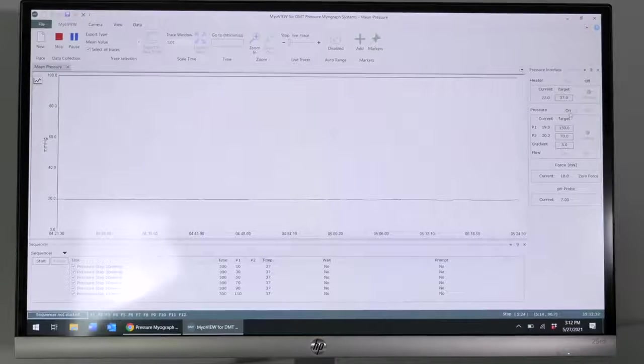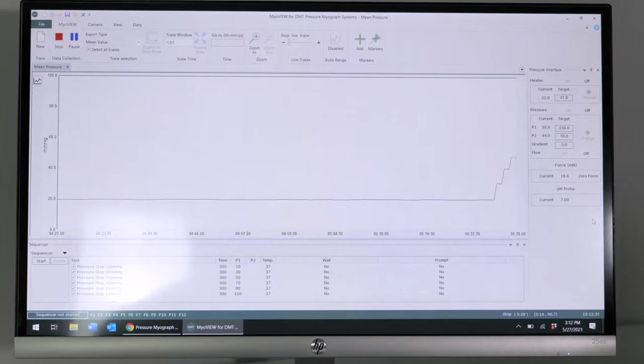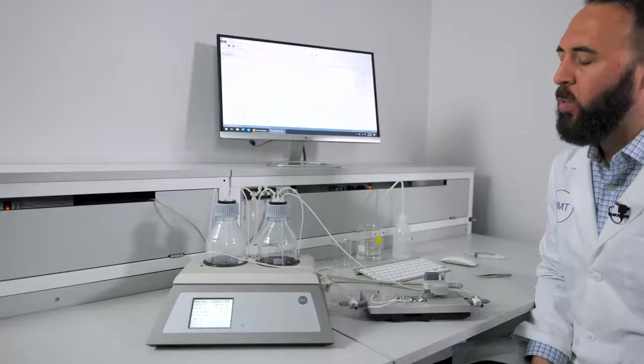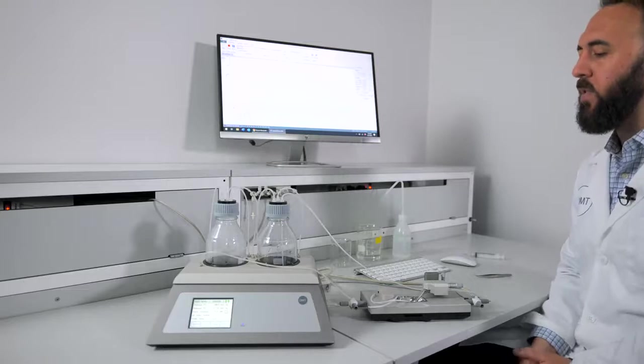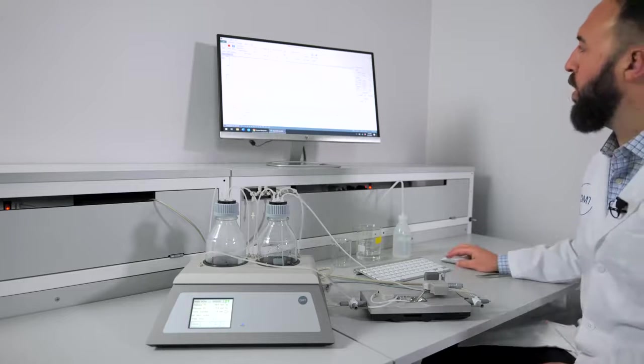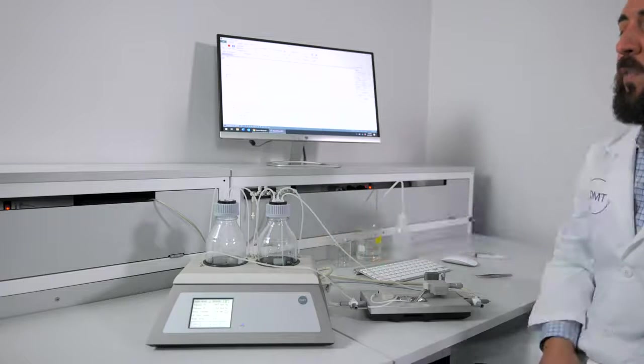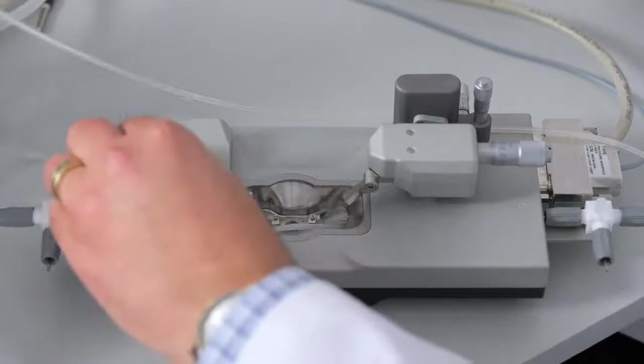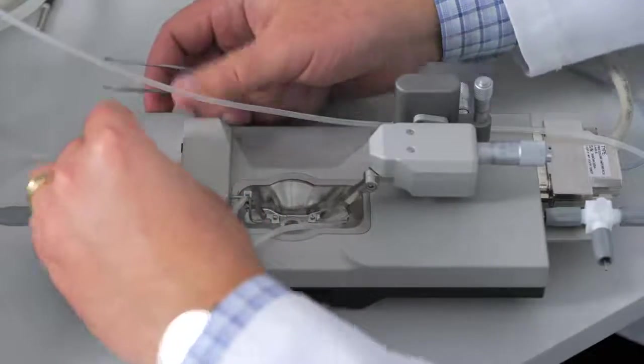Turn on pressure and make sure it reaches 150 and 70. You will let this run until the lines are dry. Once the lines are dry and there is no more water in the lines, you can then turn off pressure, remove and clean the two interface bottles, and reconnect the tubing in the chamber, removing the calibration shunt and reconnecting the tubing for your next experiment.